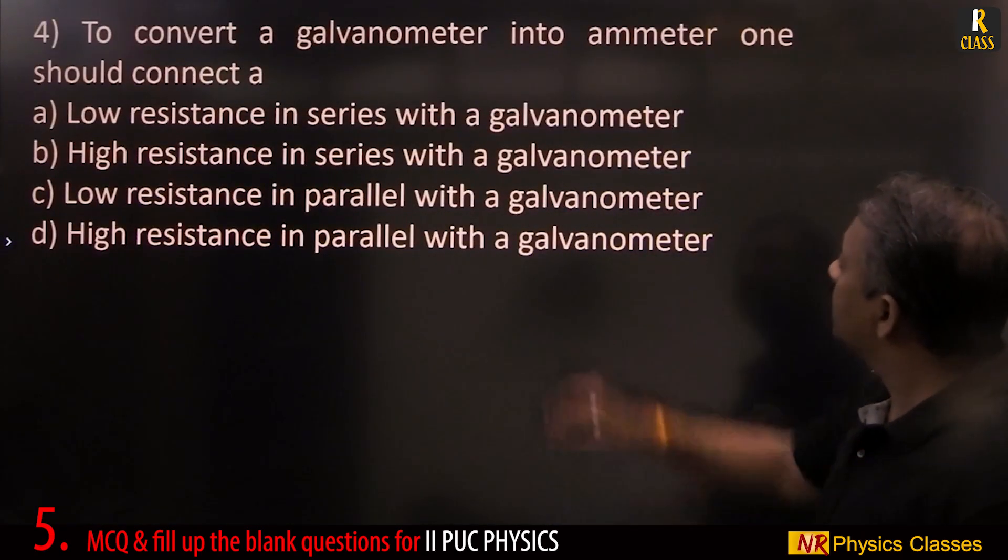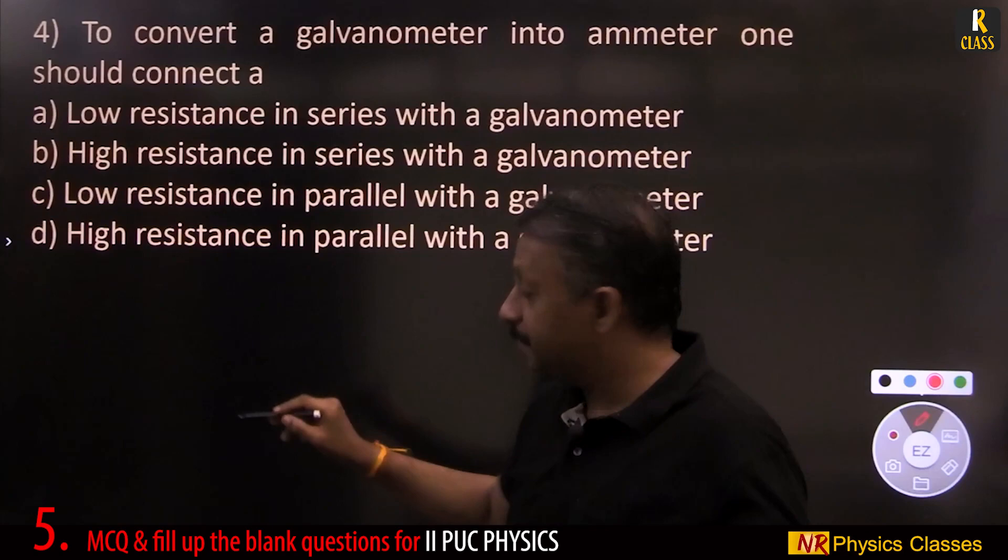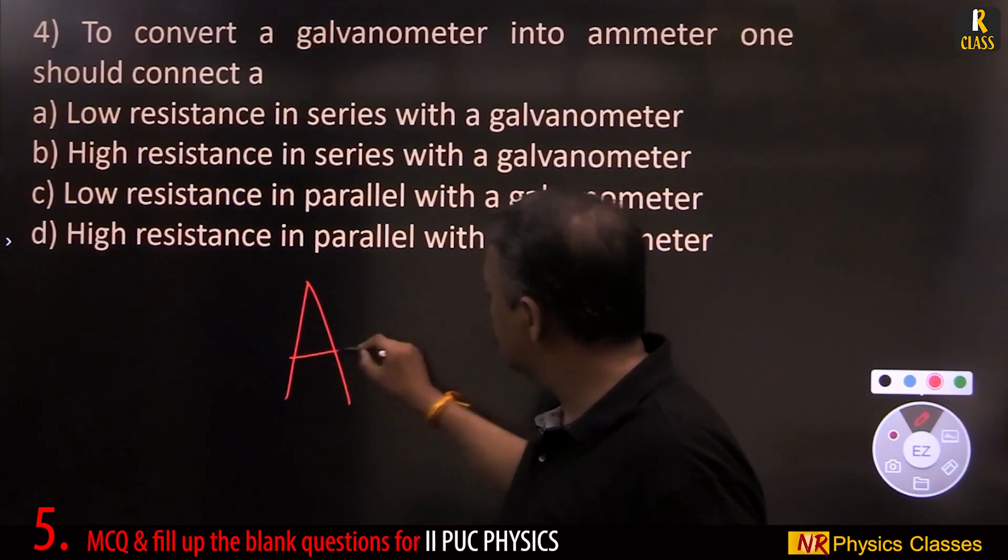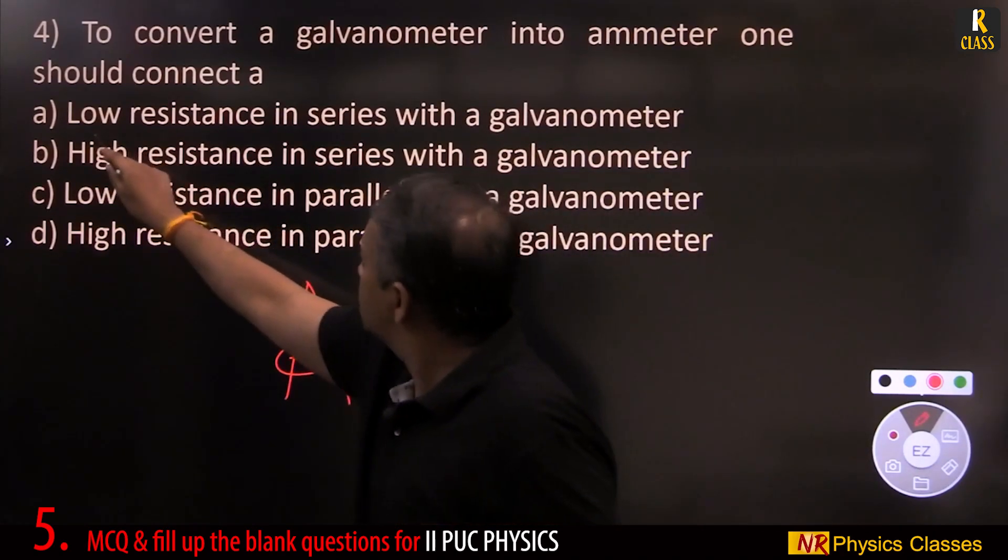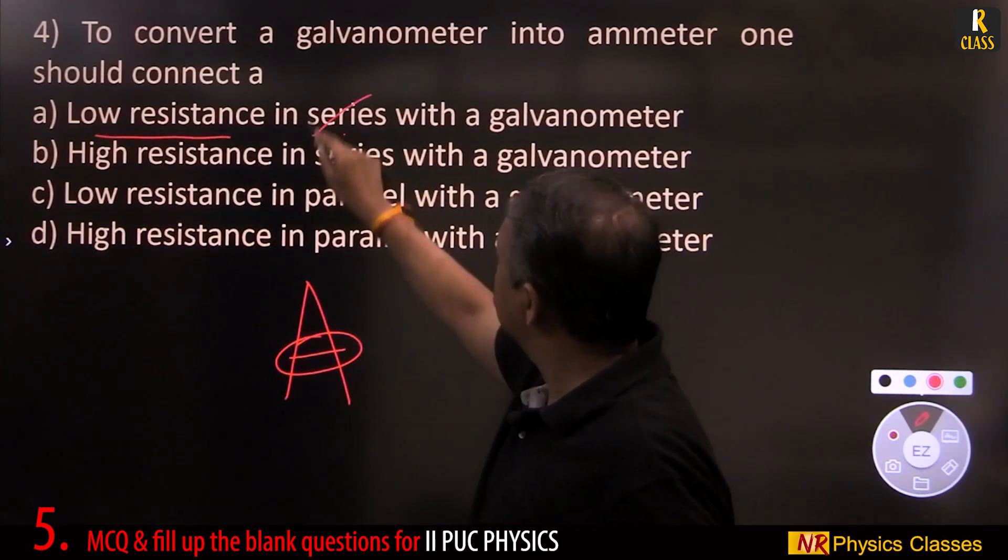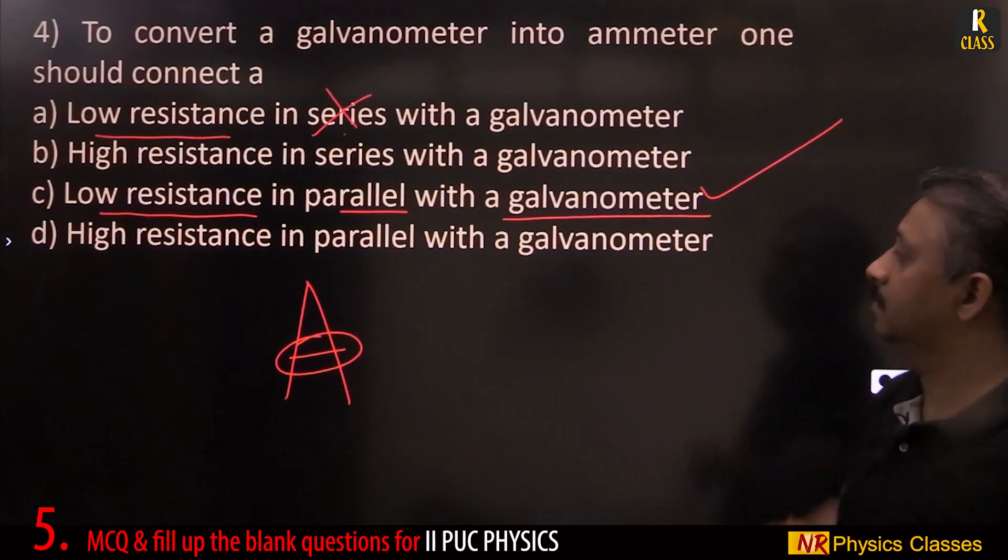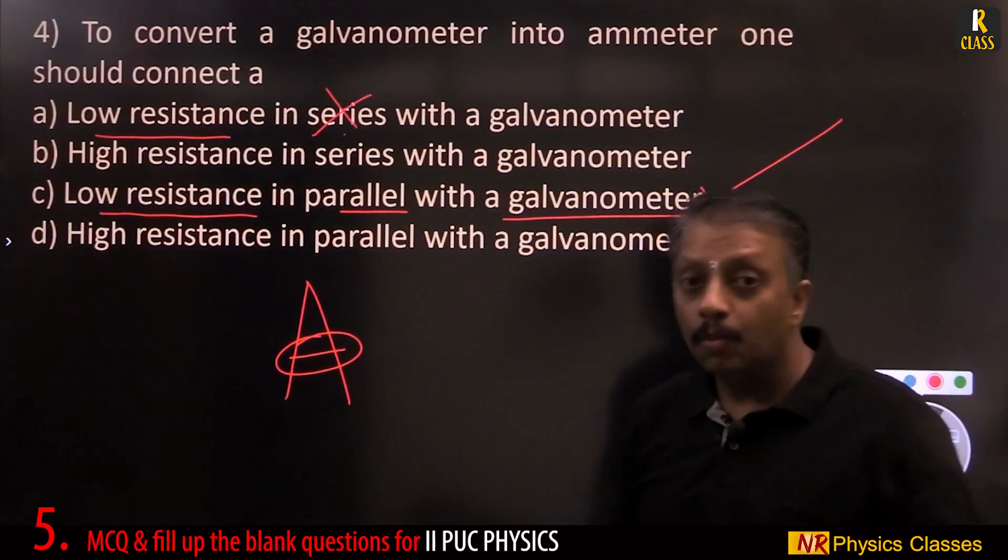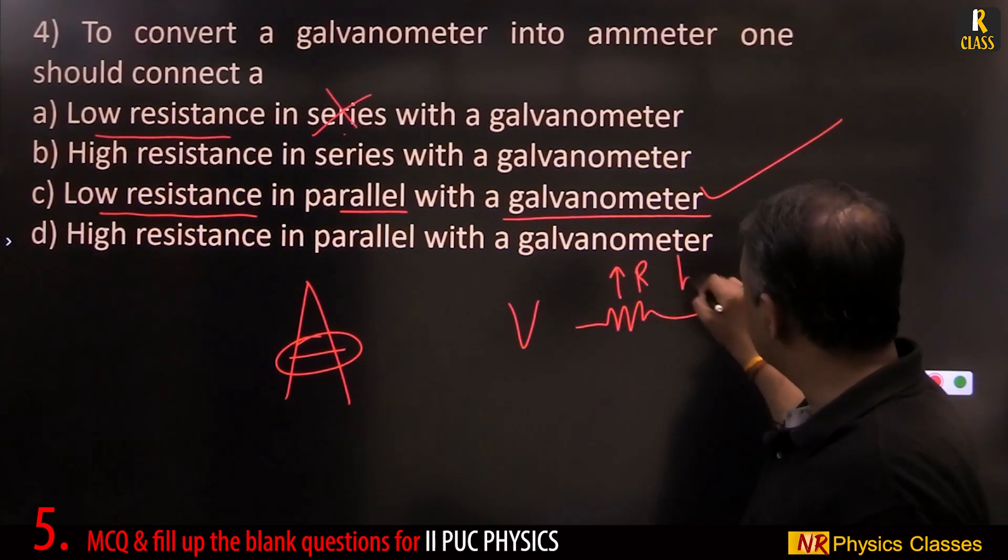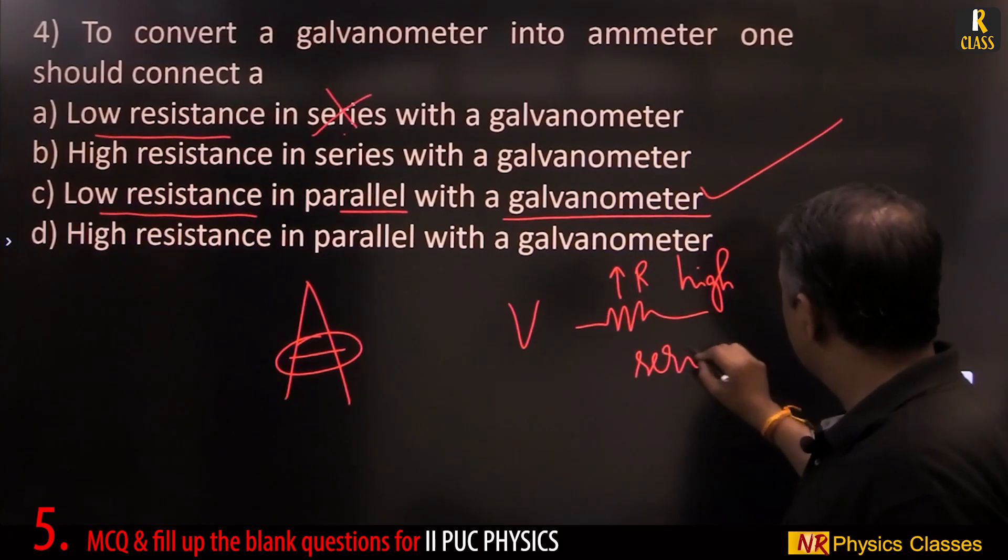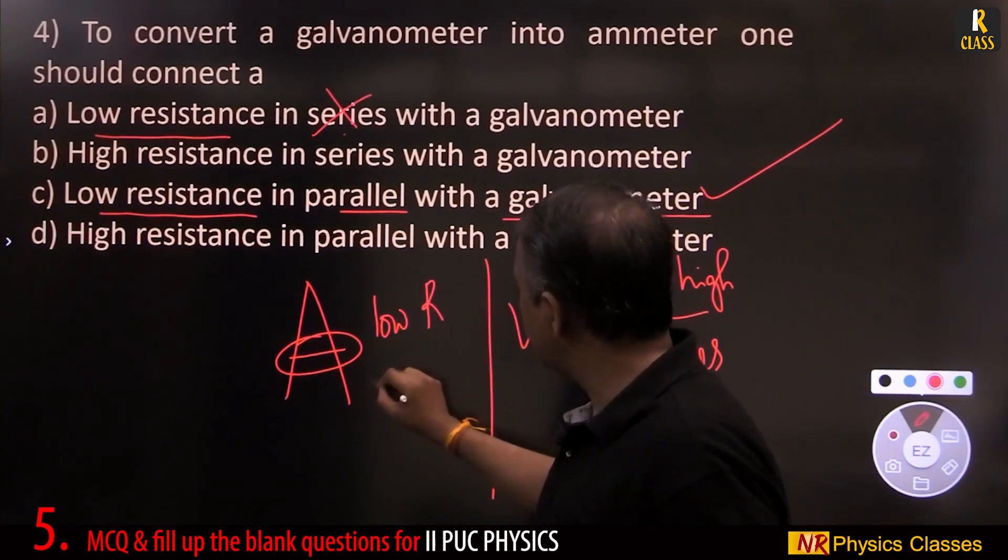To convert galvanometer into ammeter, one should connect low resistance in parallel with the galvanometer. Voltmeter requires high resistance in series. Ammeter, low resistance in parallel.